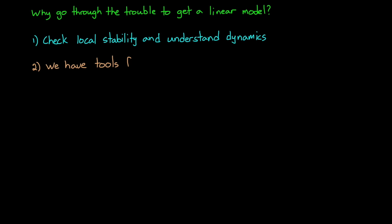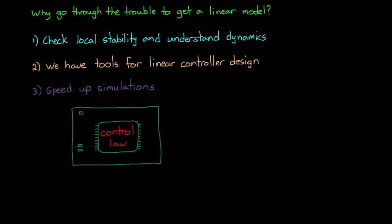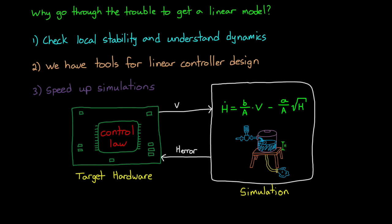Two, we have a bunch of tools that we can use to design a controller for linear models. And three, you can speed up your simulation by replacing the nonlinear model with a linear one. And this might be important if you're running a hardware-in-the-loop test, where your controller is running on the target hardware, but it's interacting with a simulation of the rest of the system dynamics. In some cases, the nonlinear math involved in running that simulation can't be solved fast enough to keep up with the real-time hardware, so replacing it with a faster linear equivalent is a good option. So, with that in mind, let's get into the process of linearization.